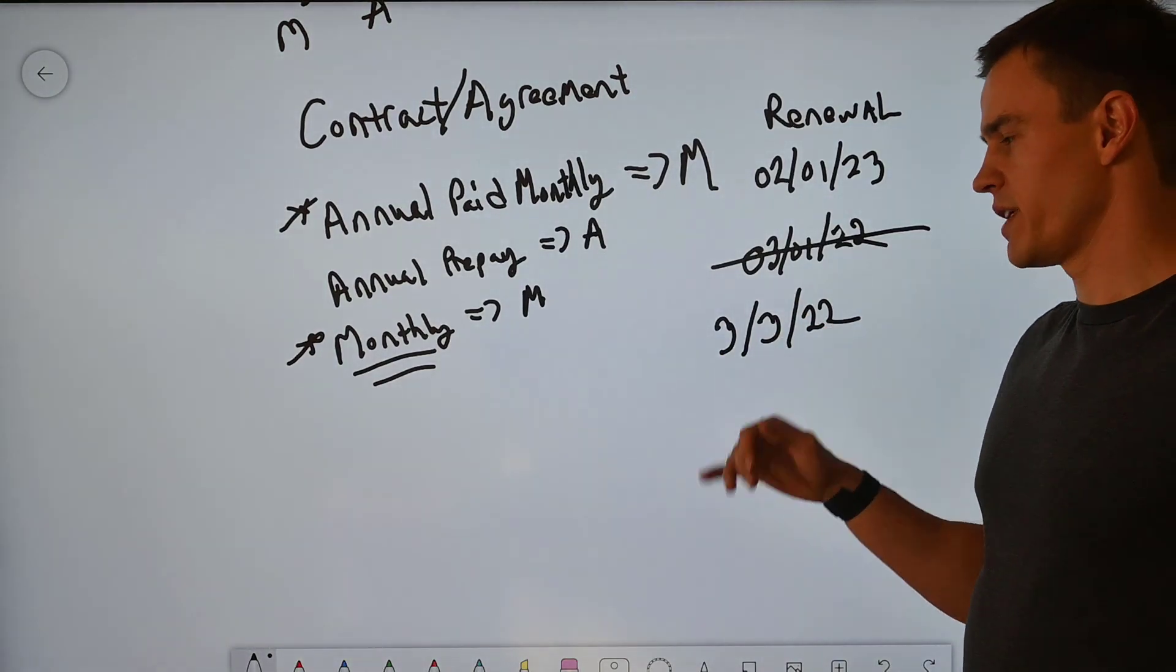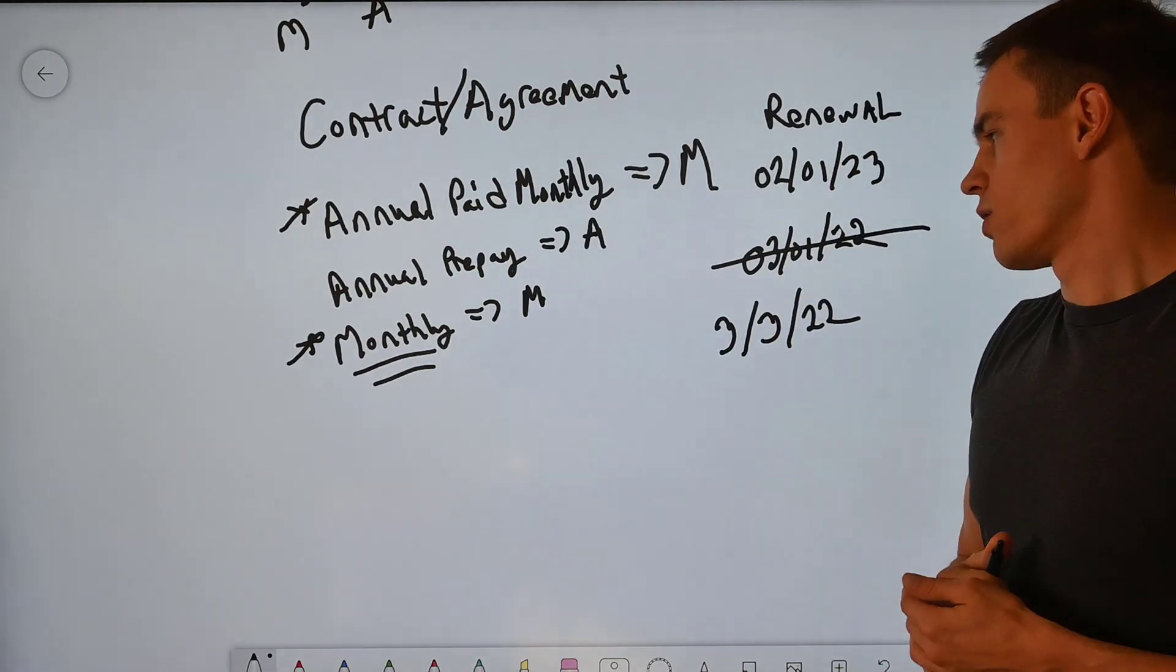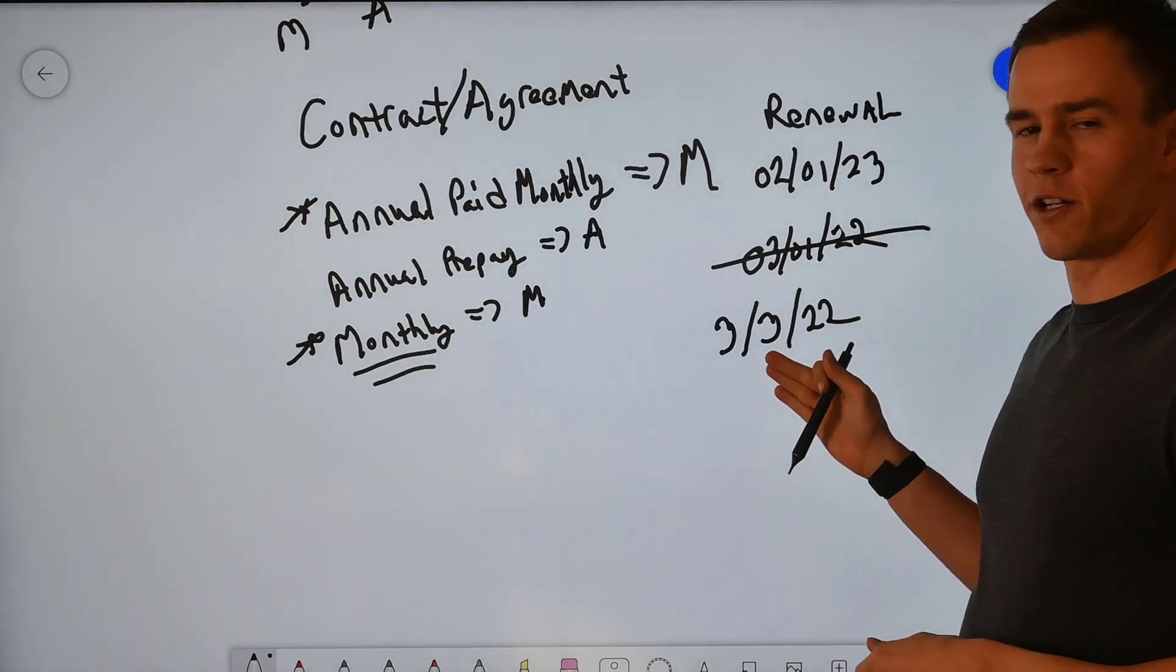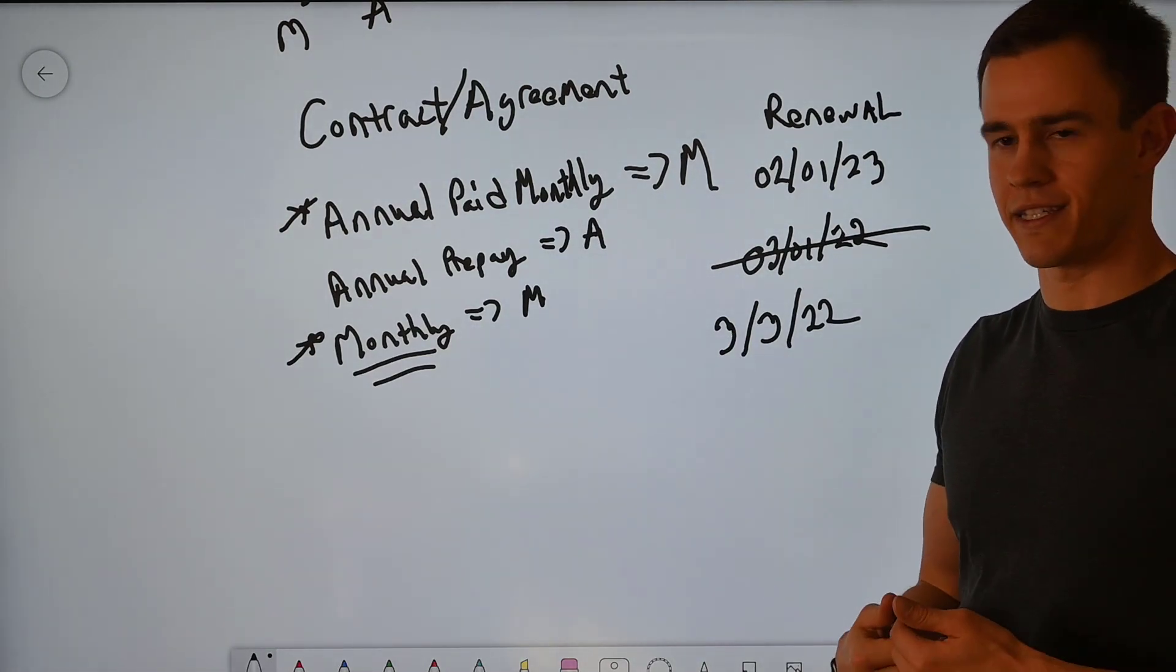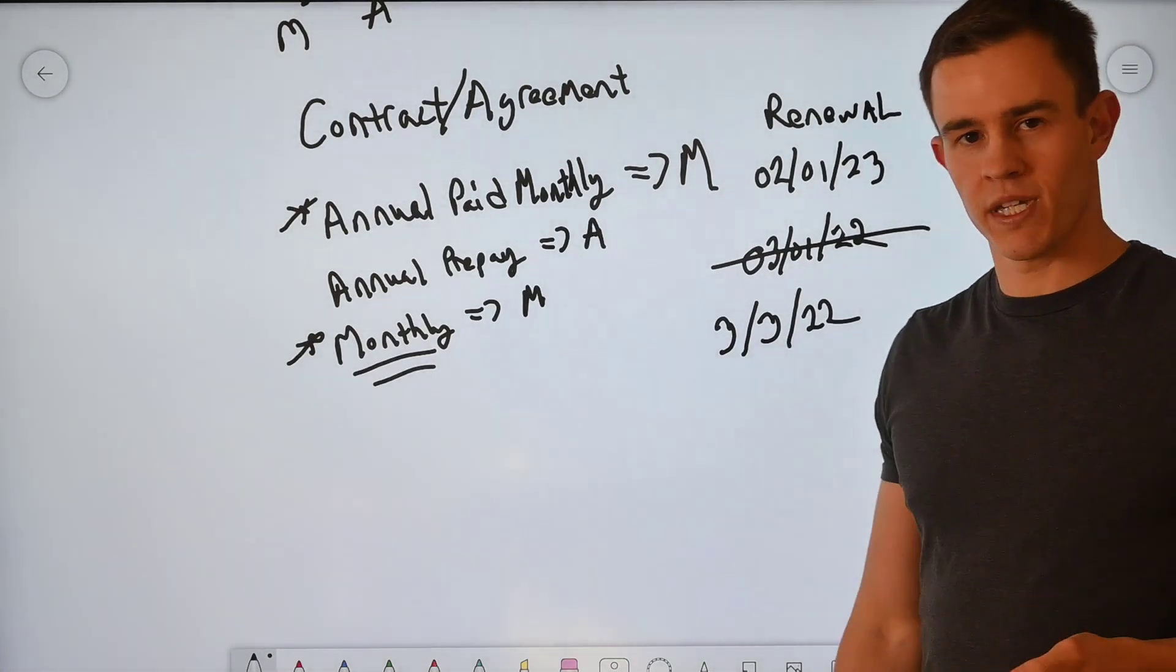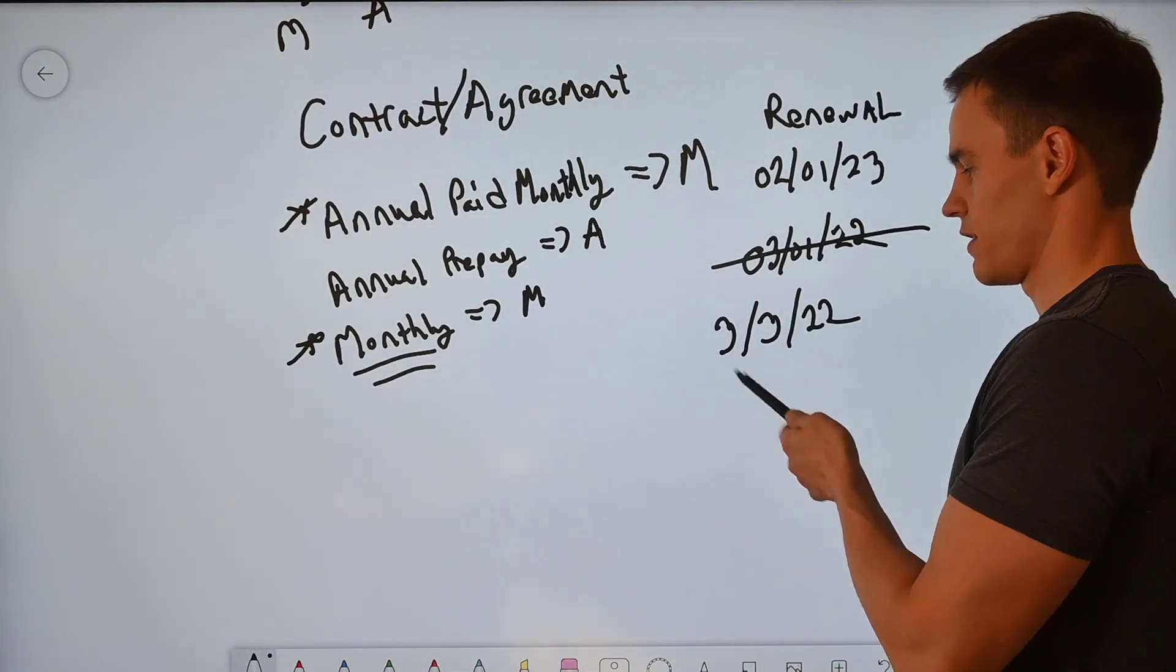So the renewal would be 3-3-22. This becomes a big problem because not only obviously you have these disparate dates here, you are essentially not able to decrement until that third comes due, which is your renewal period where you can decrement the seat counts.